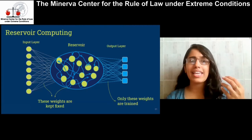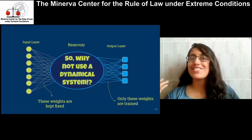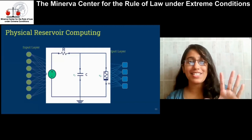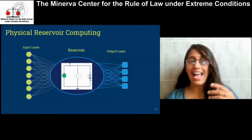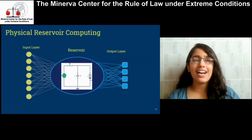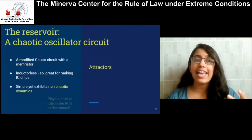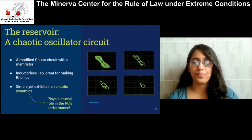The fact that recurrent neural networks behave like a dynamical system raises a question: instead of building layers of neurons and making them behave like a dynamical system, why not use an actual one? So that's what we did. We replaced the hidden layer with an actual physical dynamical system — a chaotic circuit. I am using this simple-looking electronic circuit as the neural network, and I teach it how to compute and do a task. This circuit is called a chaotic oscillator.